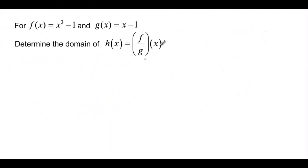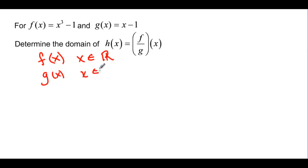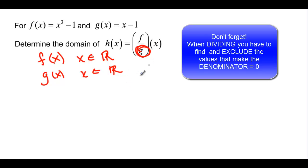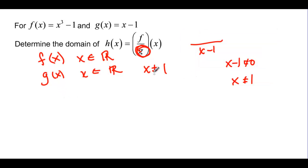We have one more set of functions for division. We need to determine the domain. So f of x is a cubic — it goes left and right forever, giving all reals. And g of x is also all reals. Except, since g is in the denominator, we also have to say x cannot equal 1, because we're dividing by x minus 1, which cannot equal 0. So x cannot equal 1.